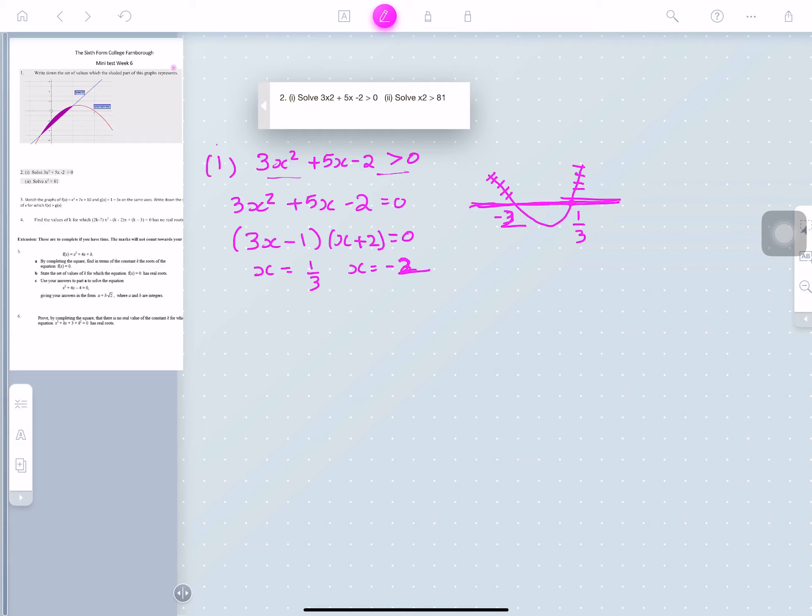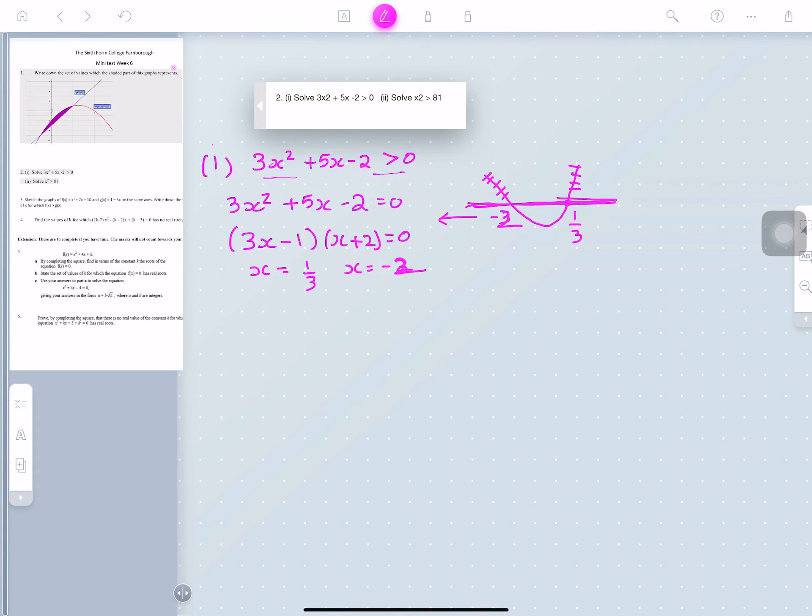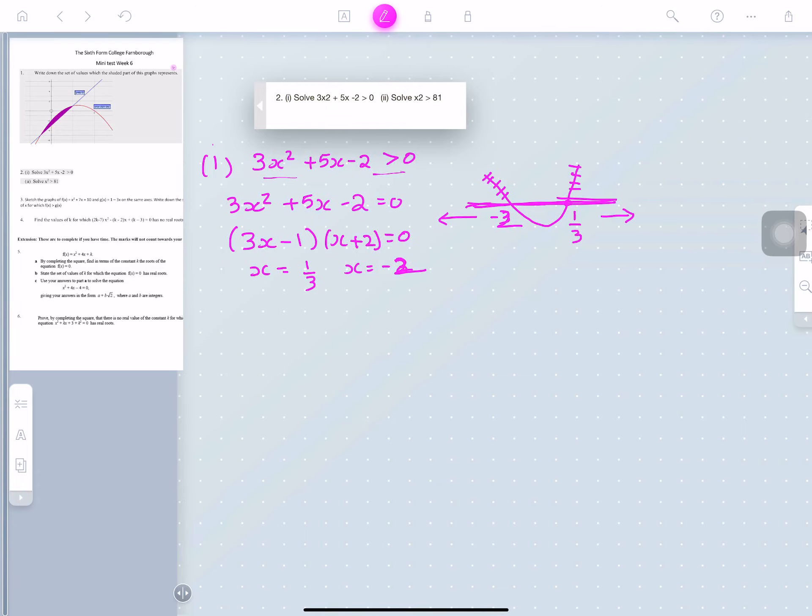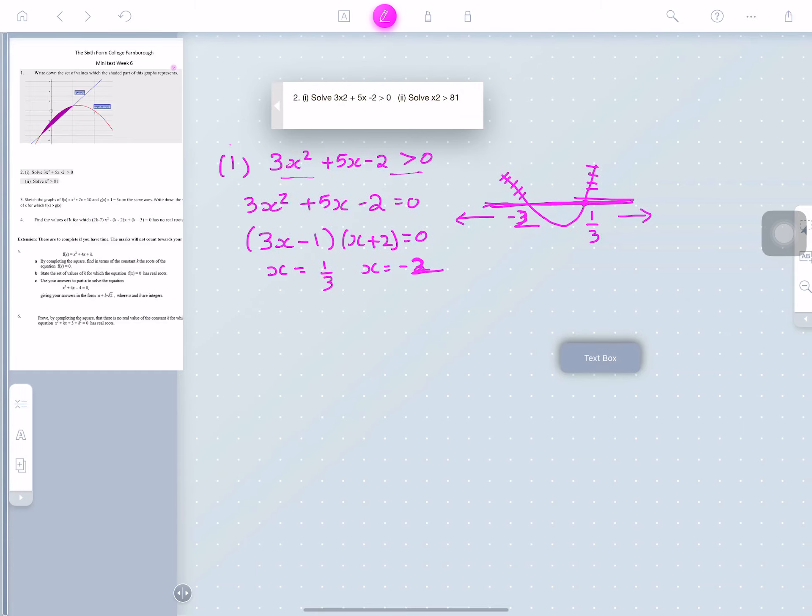So that's negative 2, and 1 over 3. So now we write it as set notation. So any values where x is that side, the curve is above the x-axis, or y equals 0 line. And anything there, the curve is above the y equals 0 line.